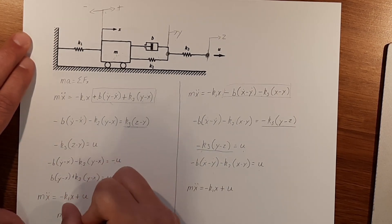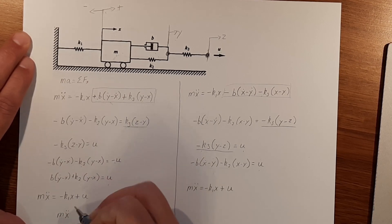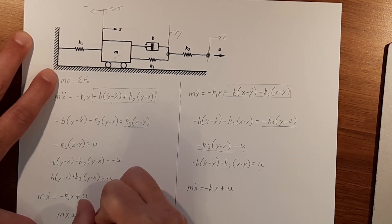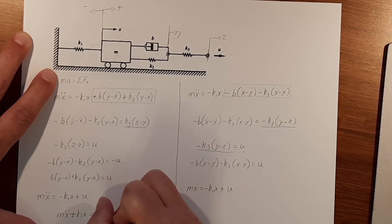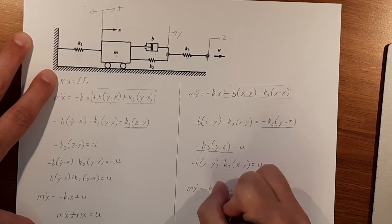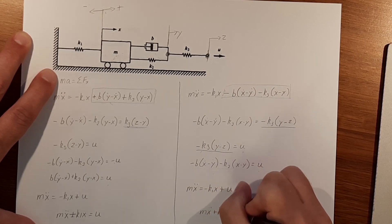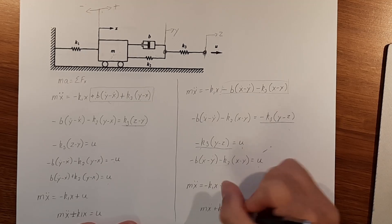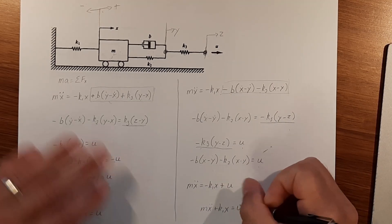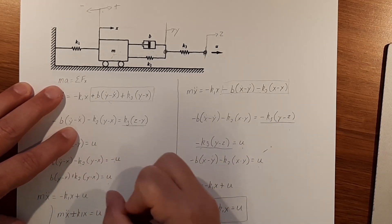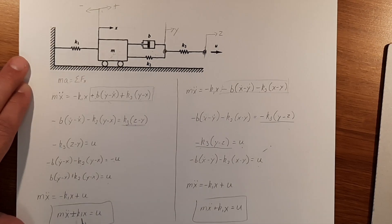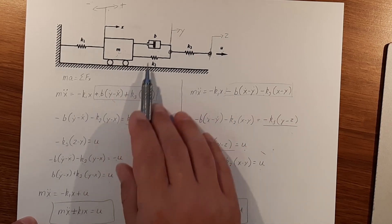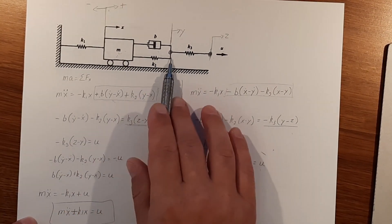Moving K1 over to isolate, we get the final answer: m·ẍ + K1·x = U. Both solution methods give the same final equation. Regardless of which sign convention you use, you just have to be careful about how your signs affect the change in position and direction of movement at each point.